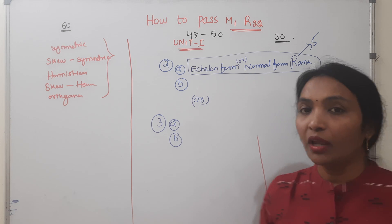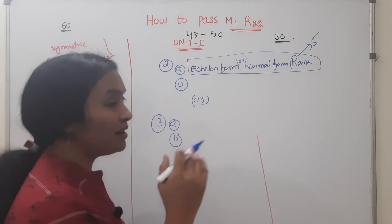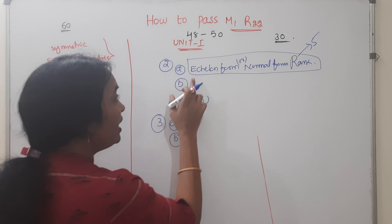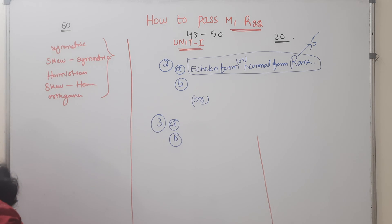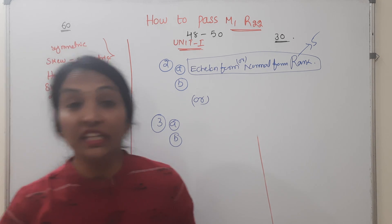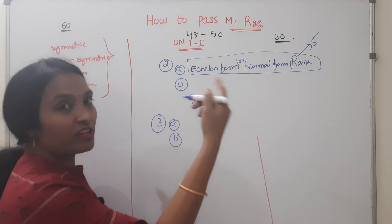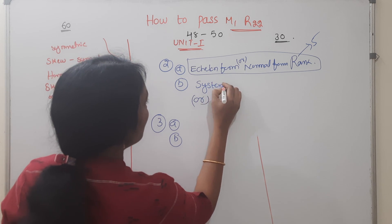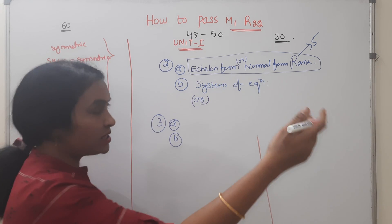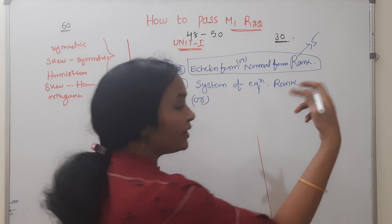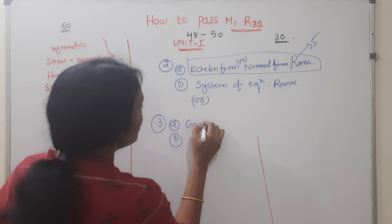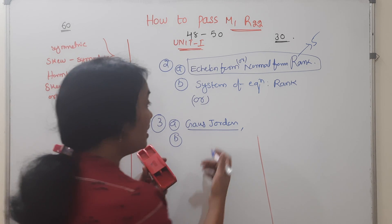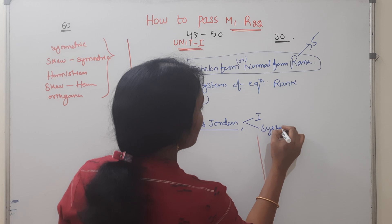If you choose option B, there is a good form here too. You can write it the same way in normal form. There is a chance to get a system of equations question — rank find out, unknown values, unique solution or infinite solution.